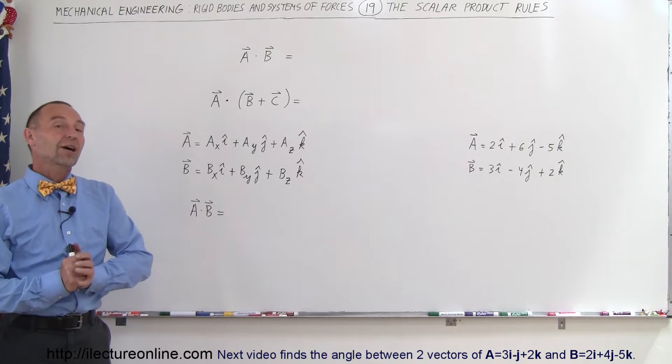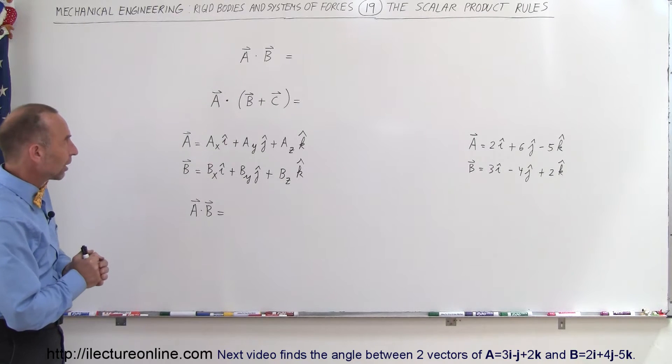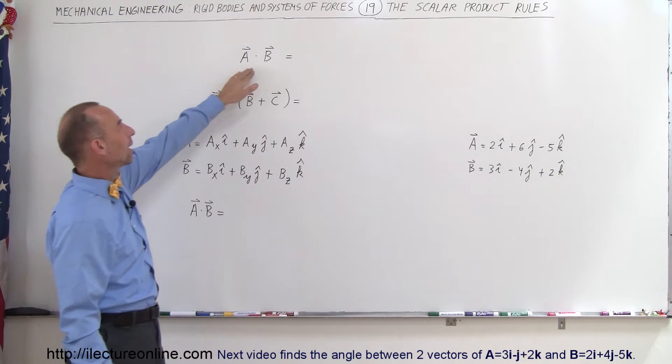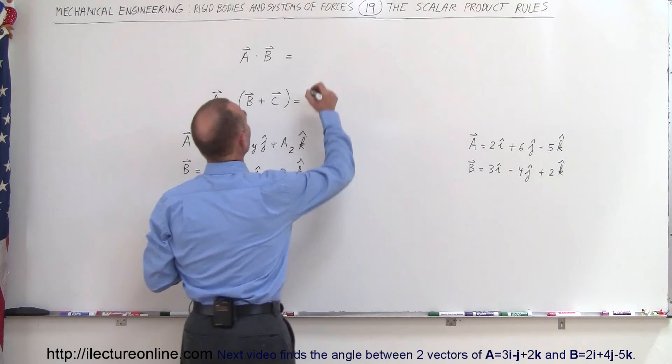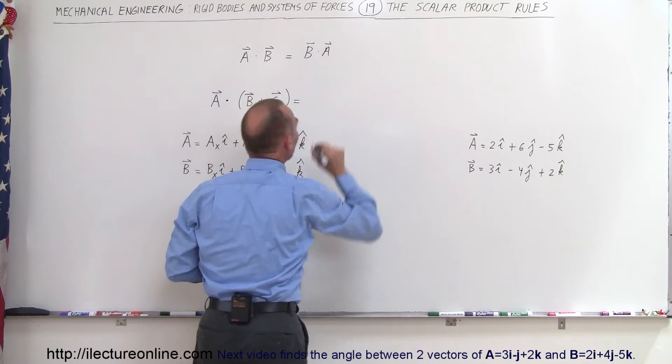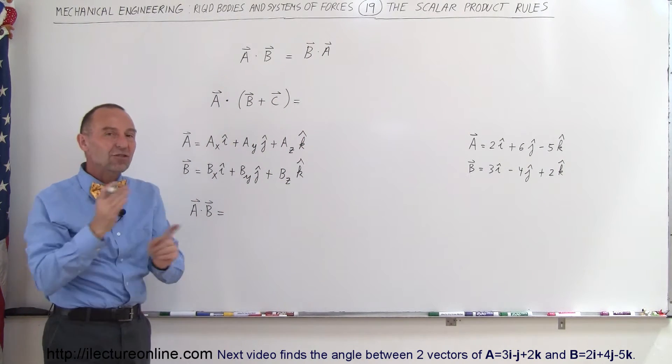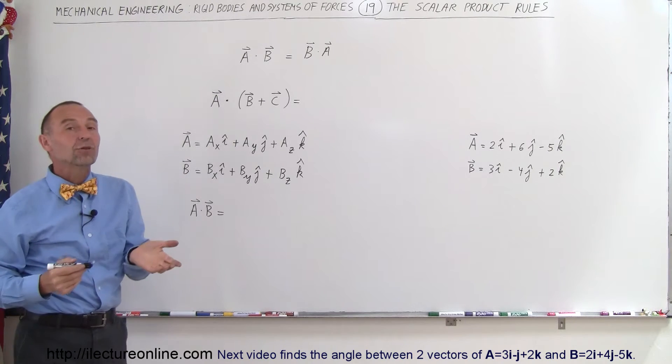Welcome to our lecture online. Now let's talk about the rules of dot products, or what we call scalar products. If we have A dot B, or the scalar product between A and B, that is actually exactly the same as B dot A. So this is unlike cross products or vector products. You cannot exchange the order of the vectors, but in scalar products it makes no difference.